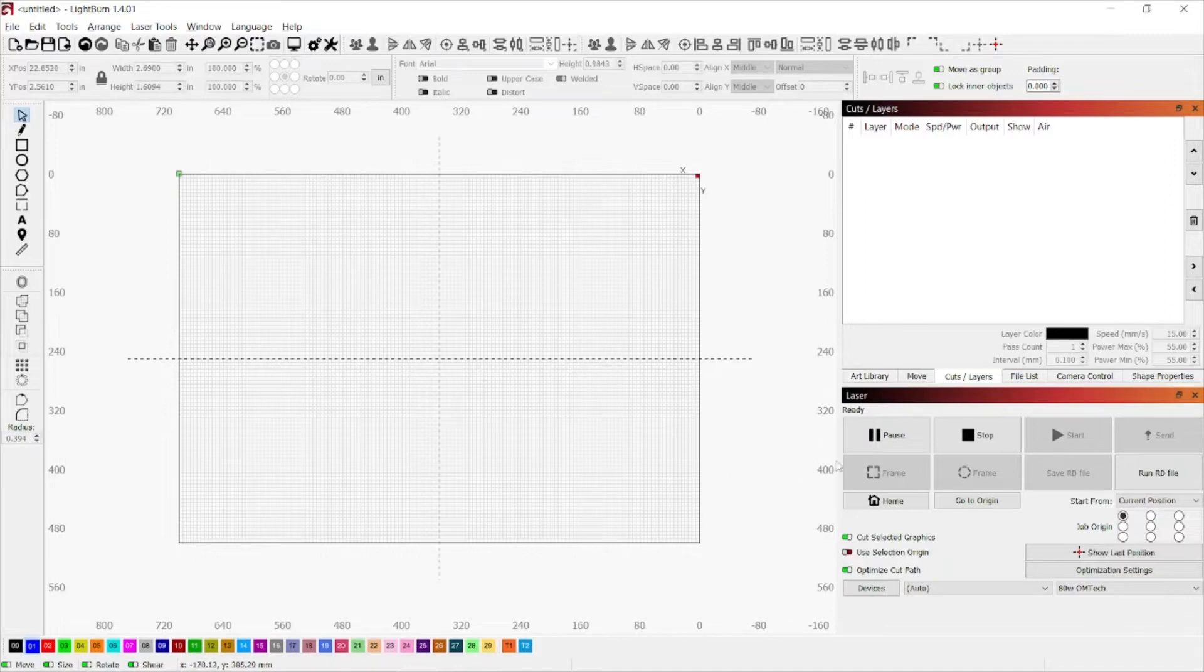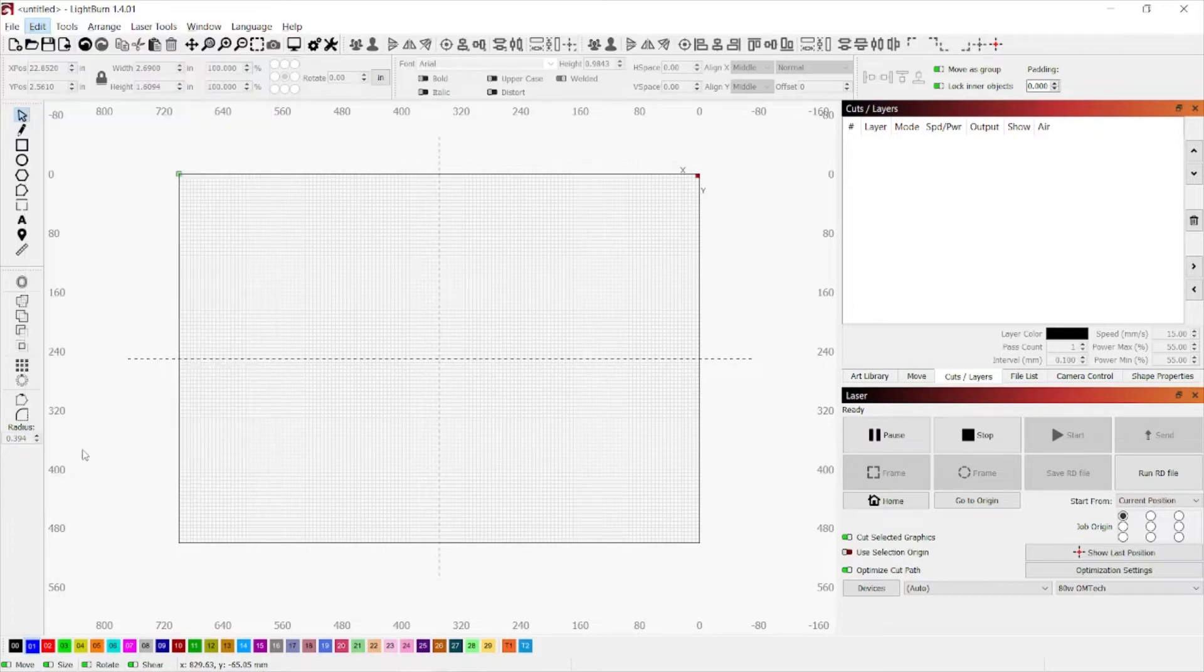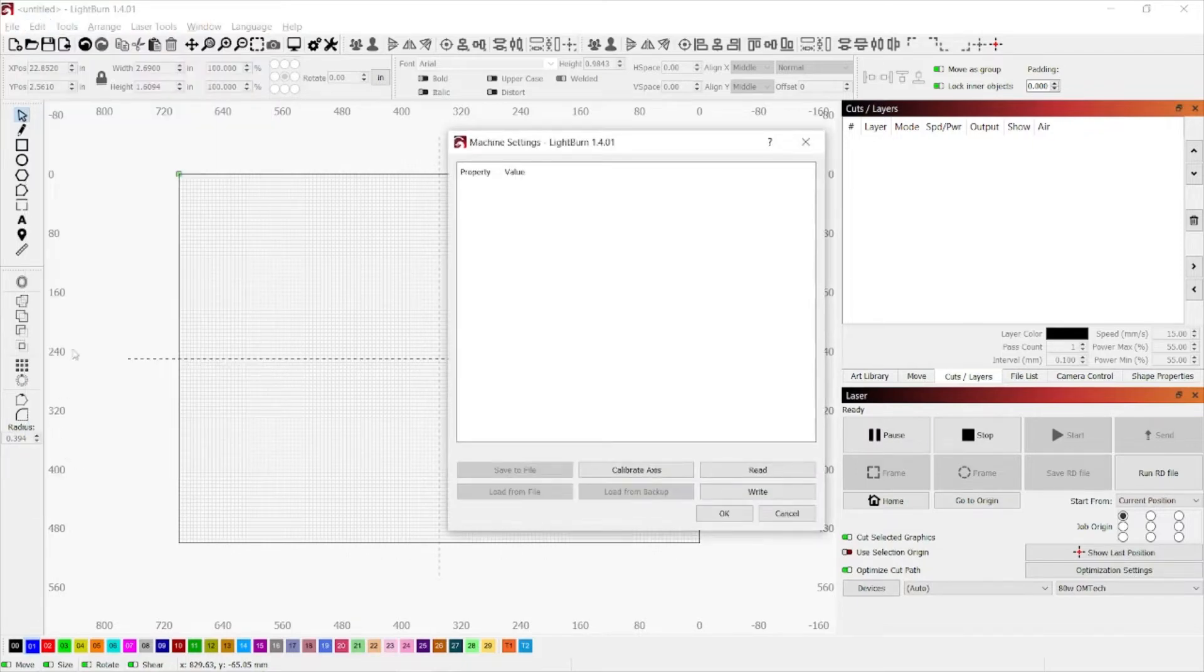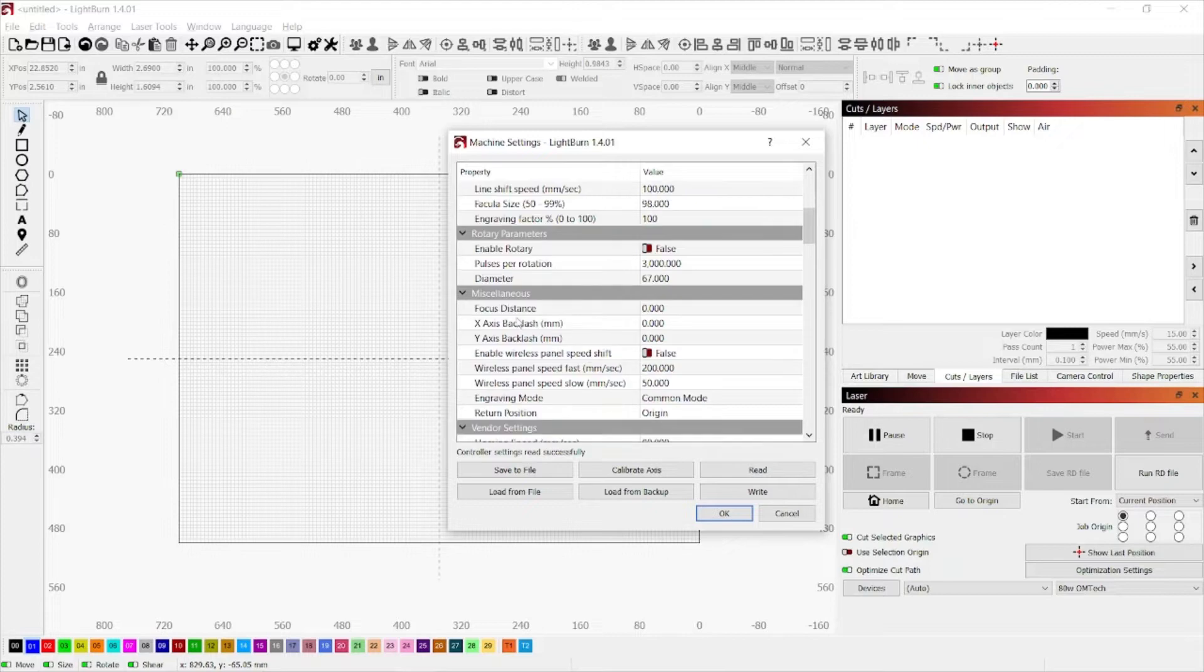We want to ensure that our laser is communicating with Lightburn. It should say Ready right here. Then we're going to want to go over to our toolbar and select Edit. Scroll down to Machine Settings. We're going to wait for our settings to populate here. Scroll down to where it says Miscellaneous. Then directly underneath that is Focal Distance. We're going to want to type in 10 because that's what American Photonics sets as their focal distance. We'll type in 10 here and then just click out of the box.